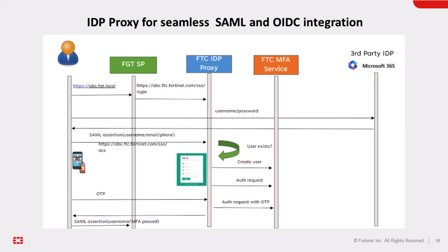With FortiToken Cloud supporting SAML and OIDC IDP interfaces, applications can be easily integrated into FortiToken Cloud SaaS services using existing SSO protocols. This integration streamlines connectivity within the Fortinet ecosystem, which already supports SAML login, eliminating the need for bespoke integration between Fortinet devices and FortiToken Cloud when utilizing a SAML service provider for authentication. Moreover, FortiToken Cloud can introduce advanced functionalities such as FIDO and adaptive authentication without the necessity of downstream updates or support.